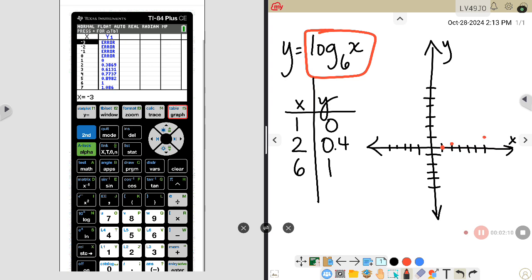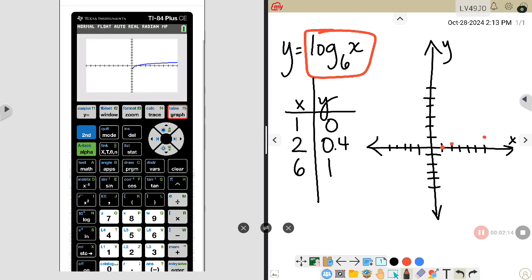What this is going to do now is it's going to come through, it's going to cross the x-axis at that one, and then it's just going to get closer and closer to that y-axis. So this is what your log functions are going to look like on the graph.